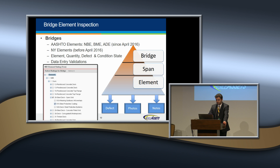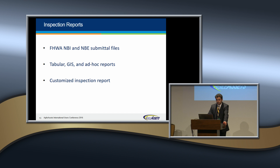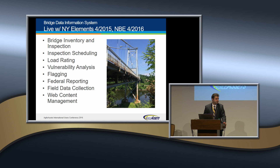For inspection reports, the system can provide both NBI and NBE submittal files — also known as federal tapes. This year, New York submitted both NBI and NBE files using Agile Assets. Tabular, GIS, and ad hoc reports are generated for each structure. Customized inspection reports are based on the status of that structure; the system generates specific inspection or flag reports and automatically attaches them to that structure. That's a brief overview of the inspection process.